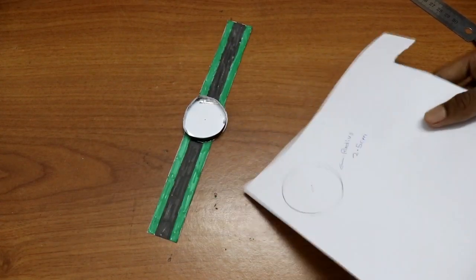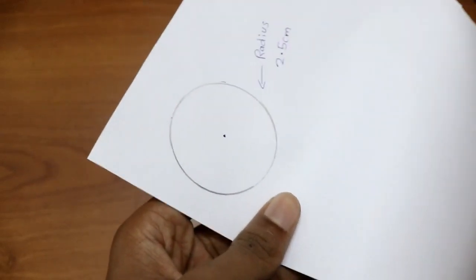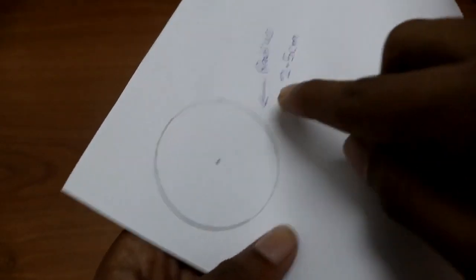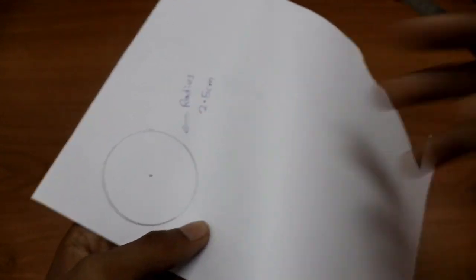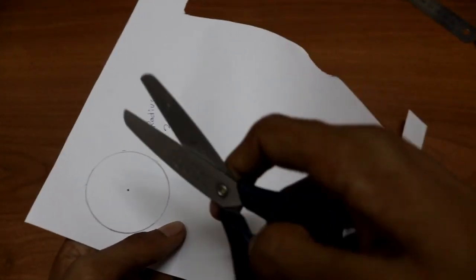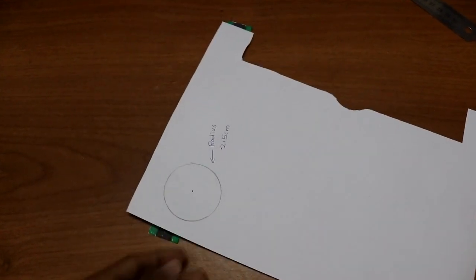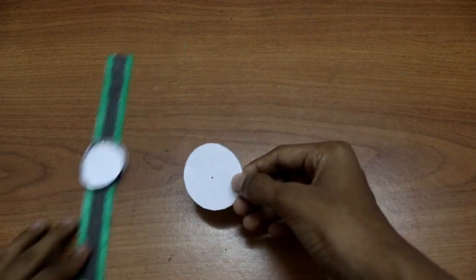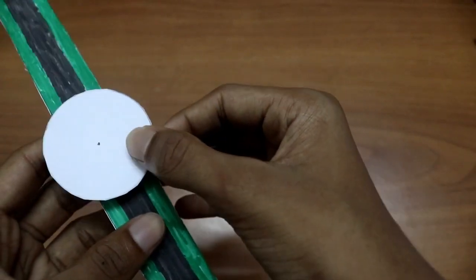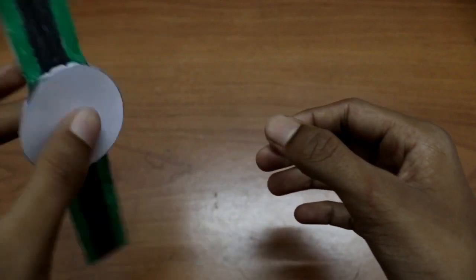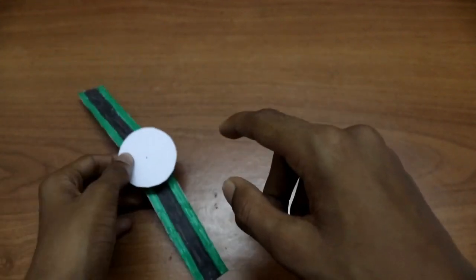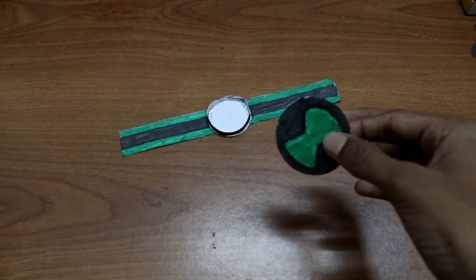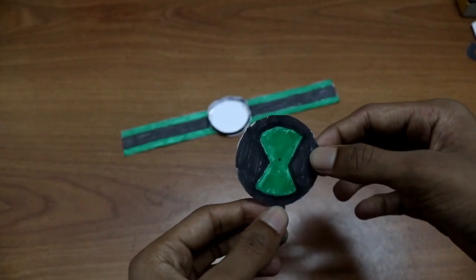I am done with the drawing and the radius is 2.5 centimeter, which is from the dot to that corner of the circle. We'll just cut it. After cutting you'll get a circle like this. Now we have to color it, but first let's see if it's perfect.